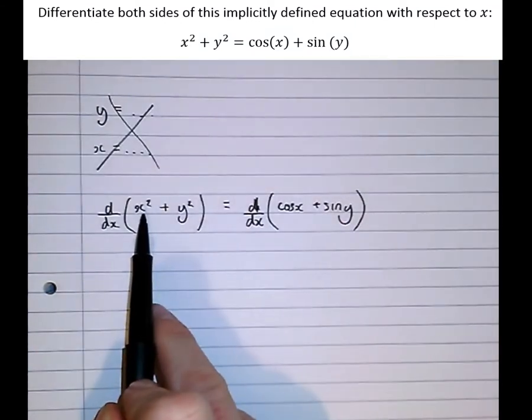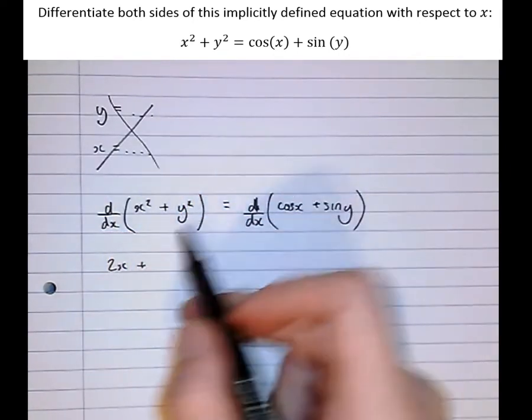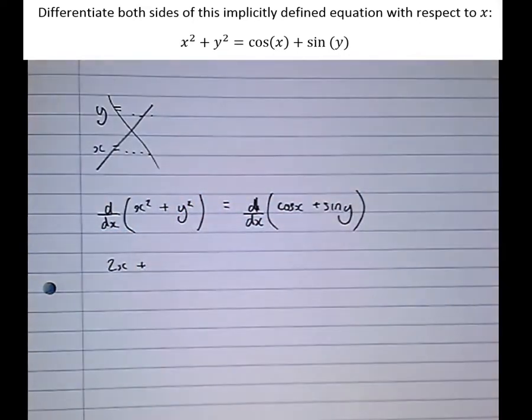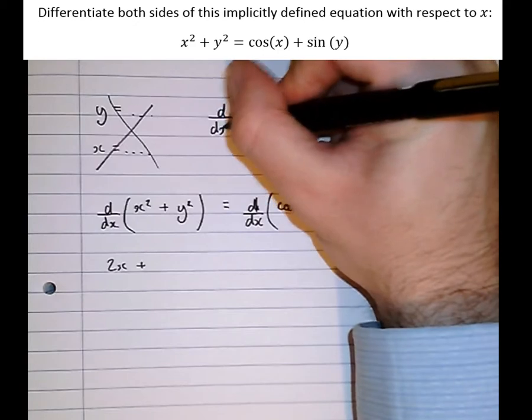So differentiating x squared, we get 2x plus differentiating y squared with respect to x. Now that poses more of a problem. We can't actually differentiate y squared with respect to x directly. So that's when we have to look at an alternative way of doing this.